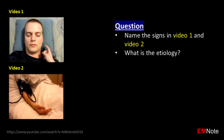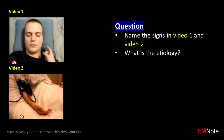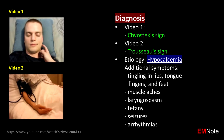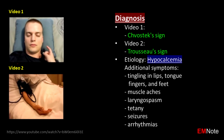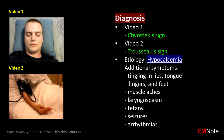The sign demonstrated in video 1 is Chvostek's sign — a clinical finding associated with hypocalcemia, elicited by tapping the facial nerve in front of the ear, just below the cheekbone. A positive Chvostek's sign is indicated by a twitch of the facial muscles on the same side of the face as the tap.